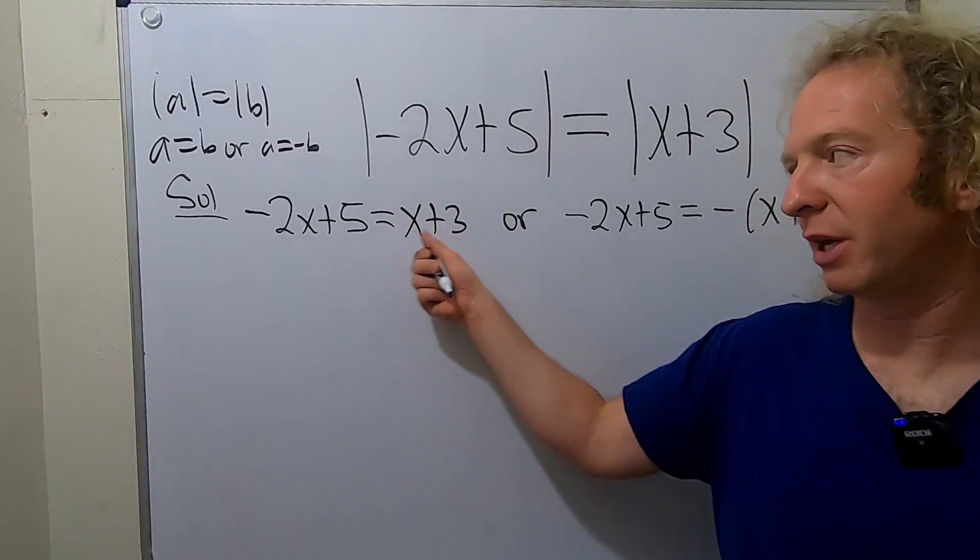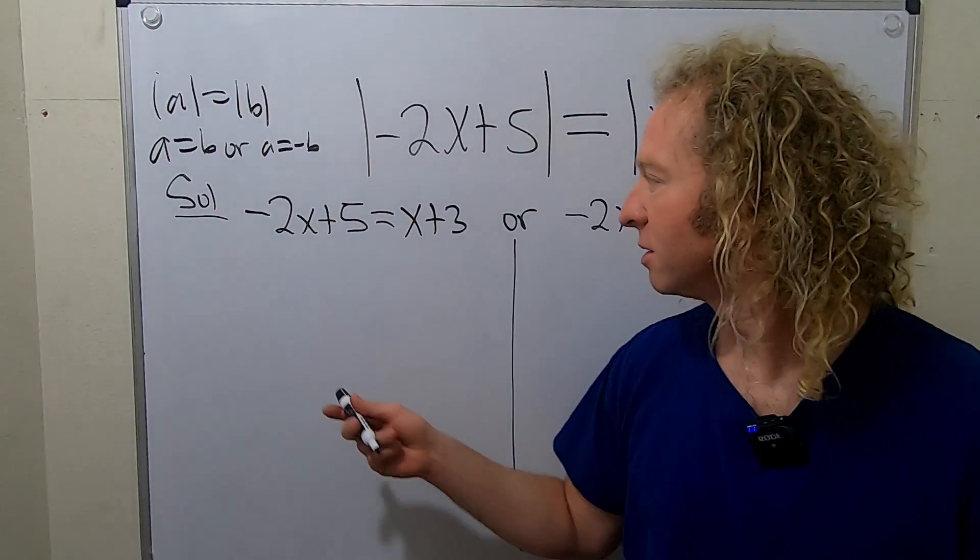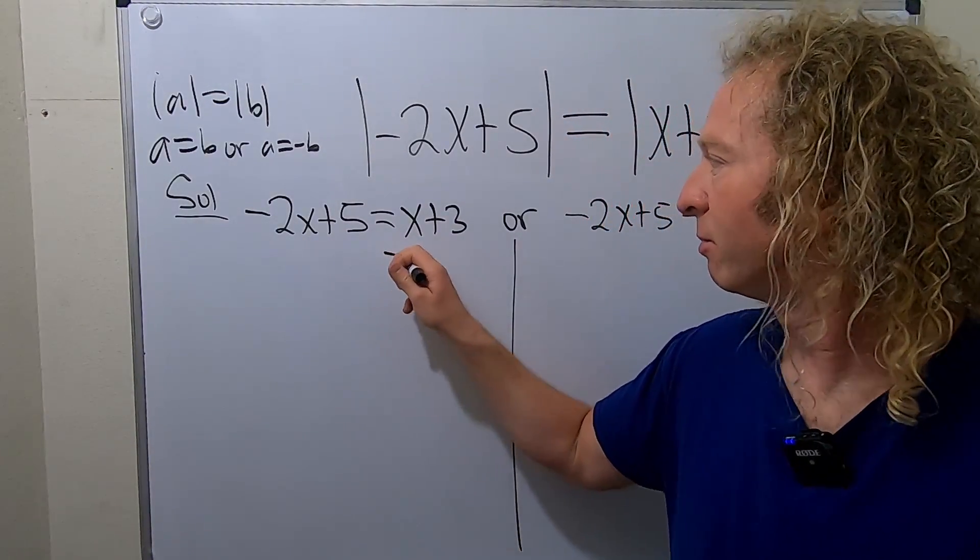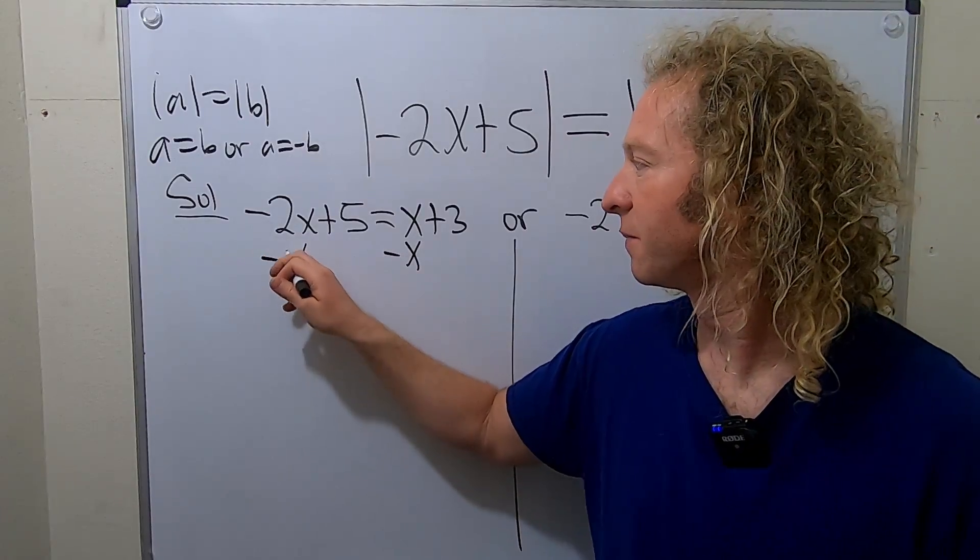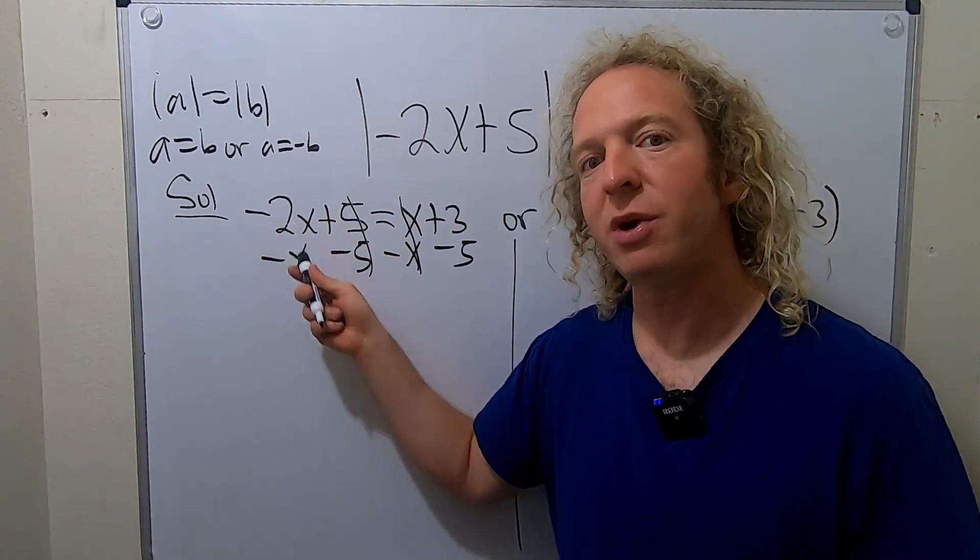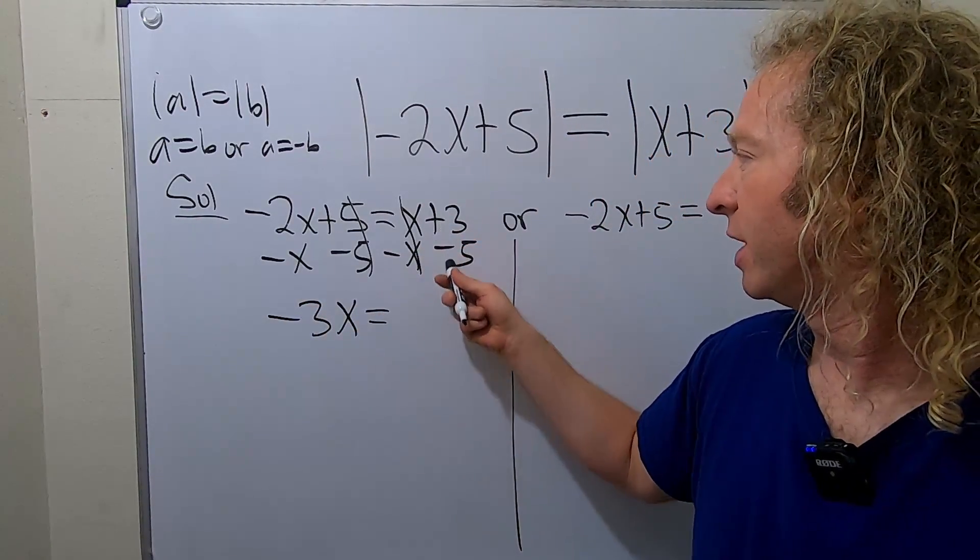Now we can solve each one individually. I'm thinking maybe subtract the x from both sides and subtract the 5. So minus x, minus x, minus 5, minus 5. Negative 2x minus x is negative 3x. This will be equal to negative 2.